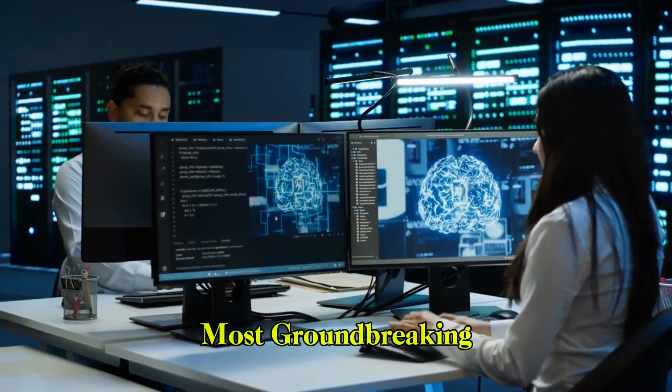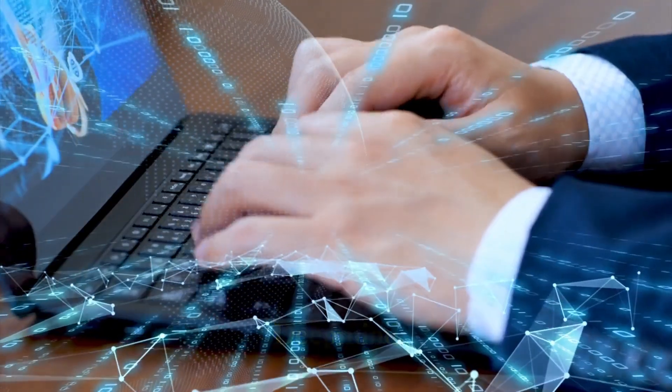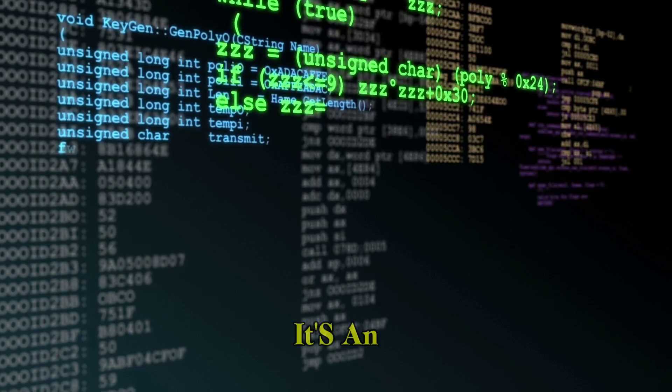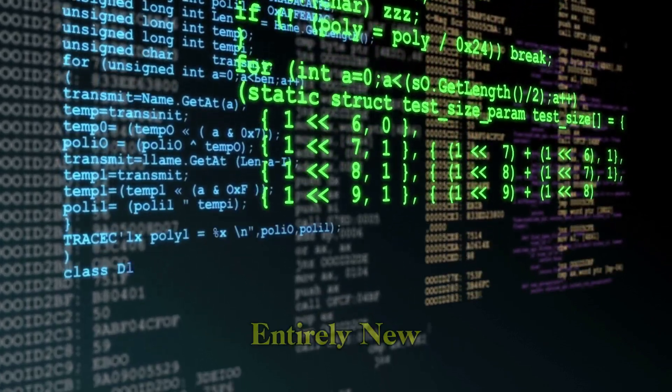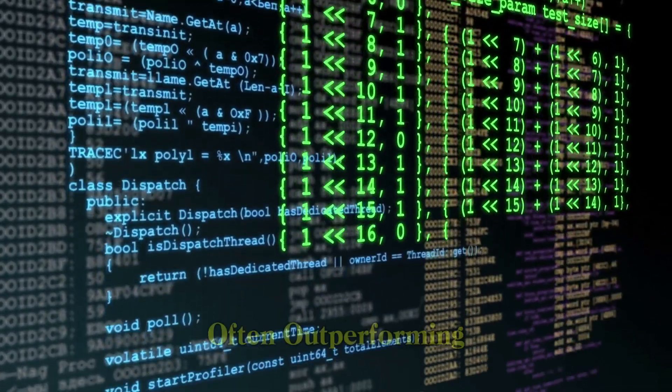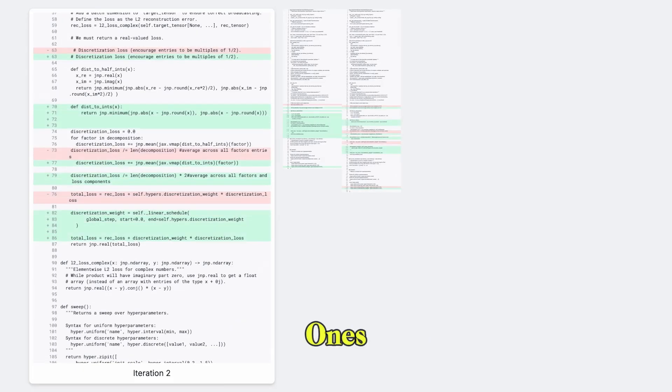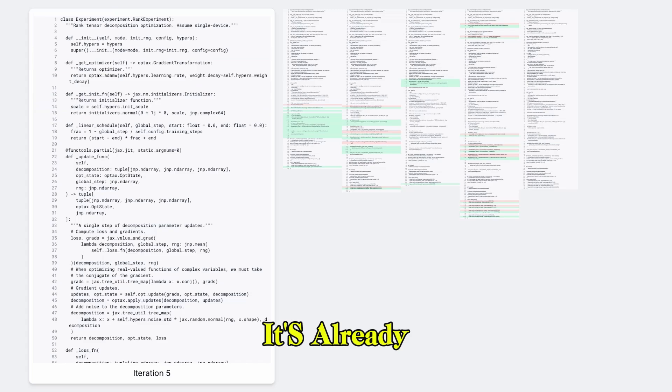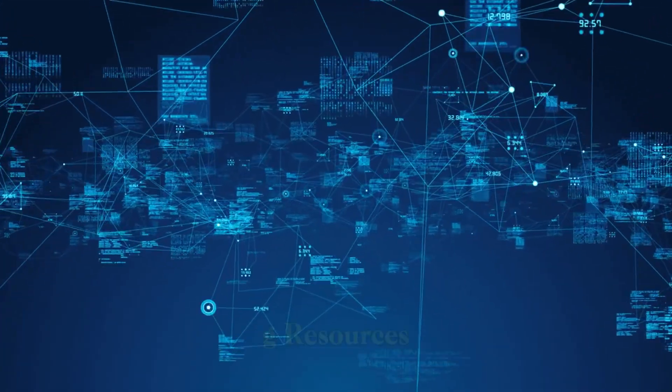Let's talk about one of the most groundbreaking AI developments to come out of Google DeepMind: AlphaEvolve. This isn't just another code-generating AI. It's an autonomous system that evolves entirely new algorithms from scratch, often outperforming human-designed ones. And it's not theoretical. It's already saving Google millions of dollars in computing resources.